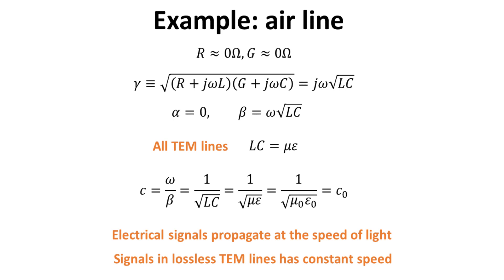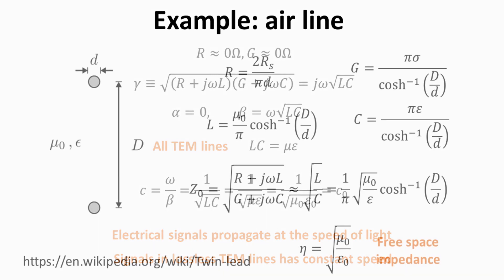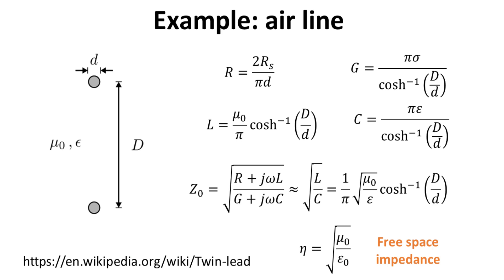A dispersive line will lead to signal distortion. Most importantly, the signal attenuation is zero in lossless transmission lines. For your reference, we show here the line parameters for a line with given diameter and line separation. R_S is the surface resistance of the wire. We see that the characteristic impedance is directly proportional to the free space impedance, differing only by a geometrical factor.